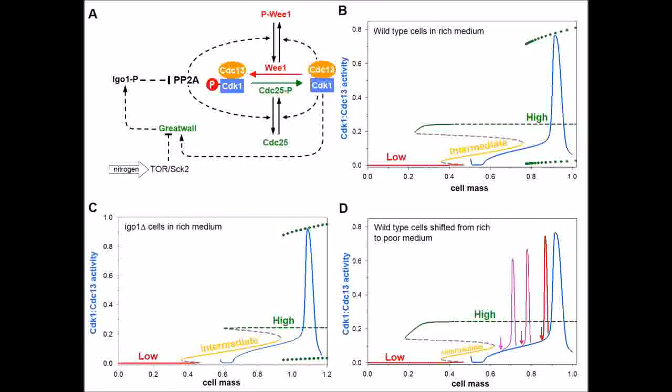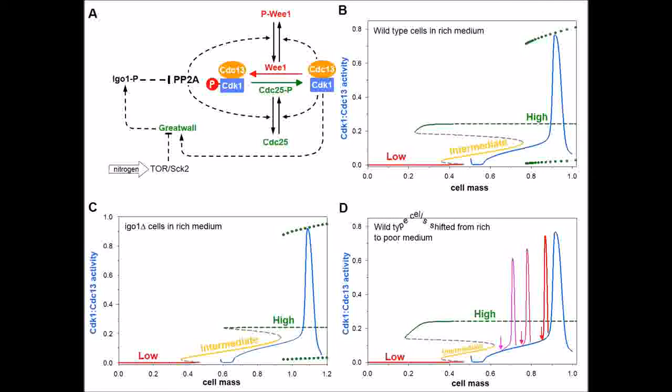If the growth rate is reduced by shifting cells to poor medium, PP2A becomes partially inhibited, which leads to a decrease of the threshold size.